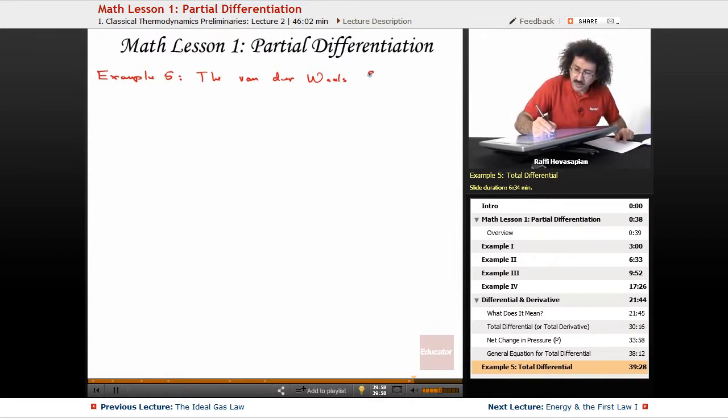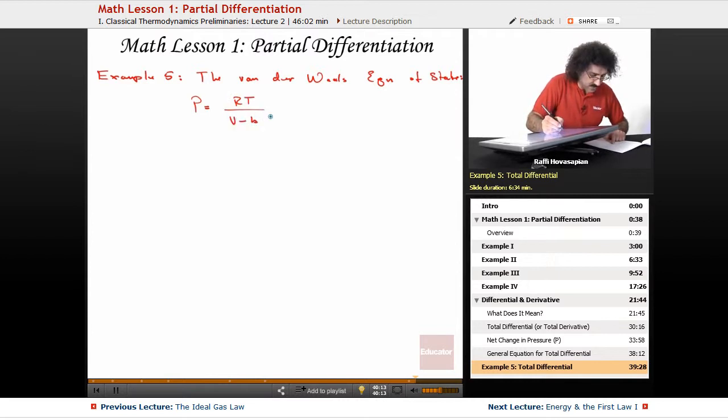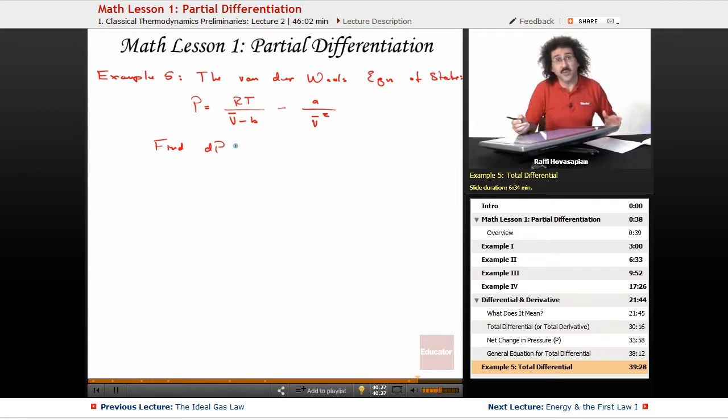So the Van der Waals equation of state, and again, it's an equation of state because it gives you the state of a particular system. It is, I'm going to write it in this form, P equals RT over V minus B minus A over V squared. Okay, find DP, the total differential.